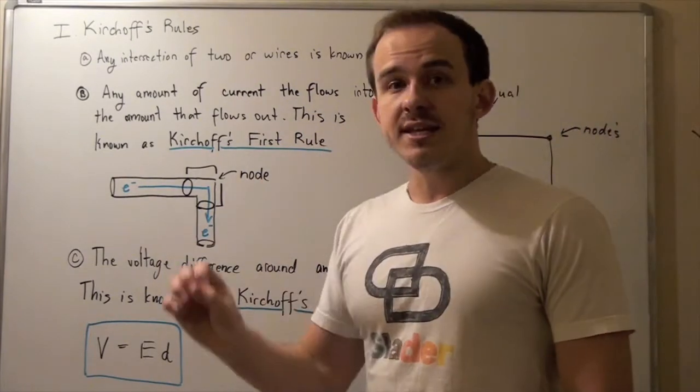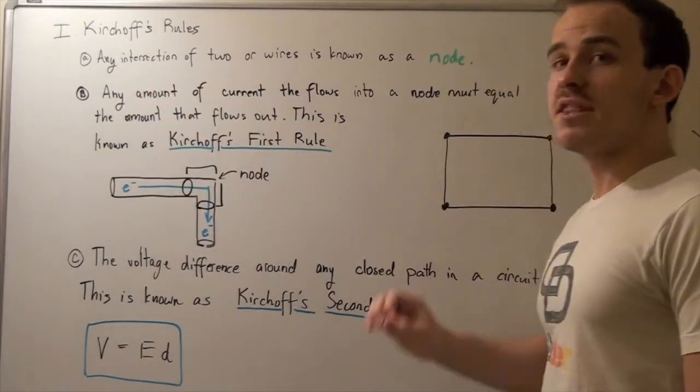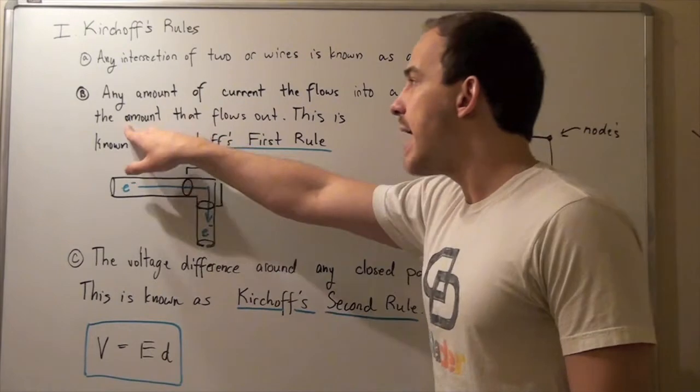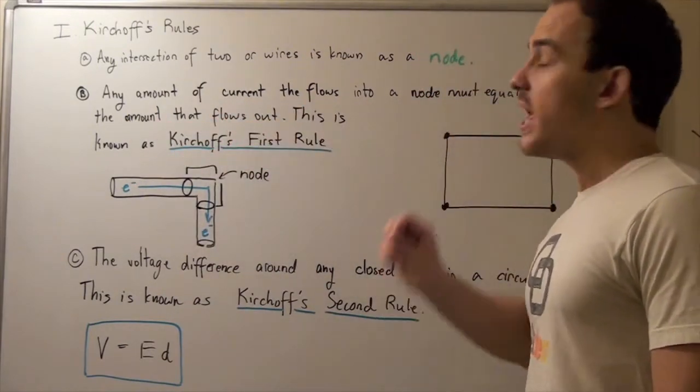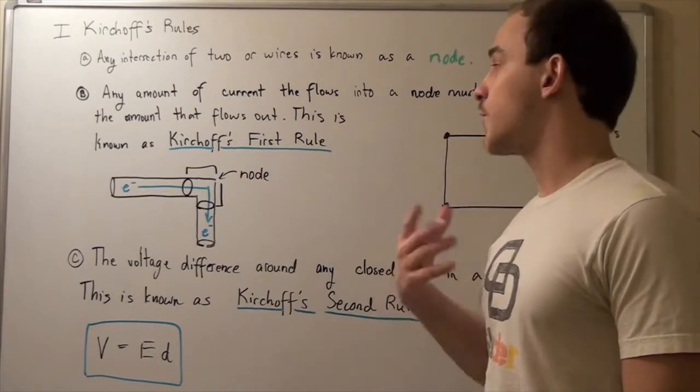That leads to the following conclusion. Any amount of current that flows into a node must equal the amount that flows out of that node. This is known as Kirchhoff's first rule or Kirchhoff's first law.